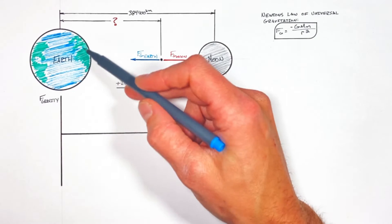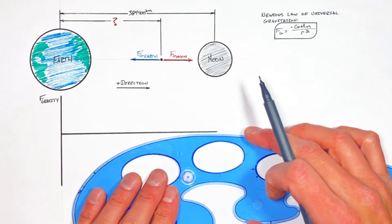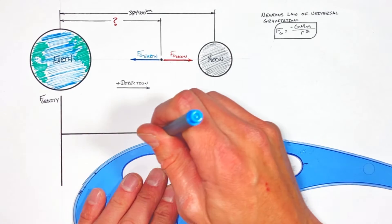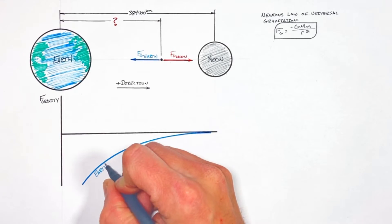You see, applying this equation first to the force by the Earth, the force by gravity from the Earth is large and towards the Earth—that's the negative direction—when our object, in this case the spaceship, is close to the Earth, but as it gets farther and farther away that force drops off.